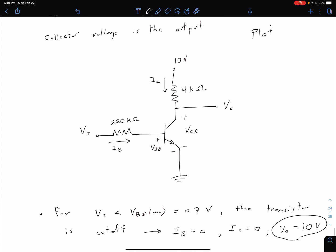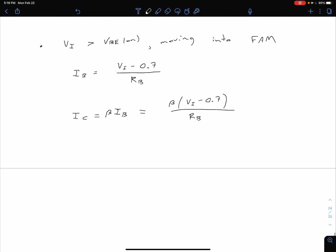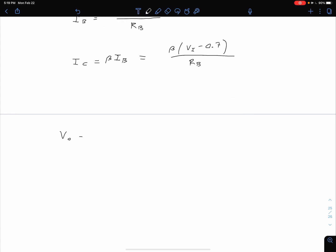Relating this back to our circuit, we can now say that our Vout is going to be the 10 volts minus whatever is dropped across this 4k ohm resistor. The voltage drop across the 4k ohm resistor is just IC times RC. So our output voltage Vout is equal to VCC minus IC times RC. Plugging in our expression for IC we can see that our Vout is defined as VCC minus beta RC times that quantity VI minus 0.7 divided by our RB.